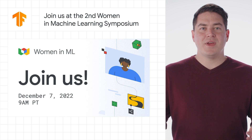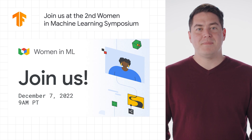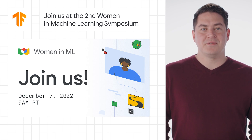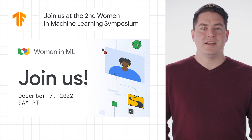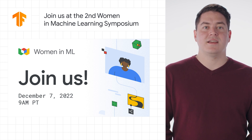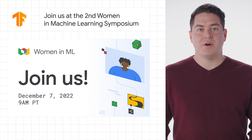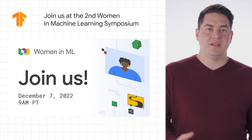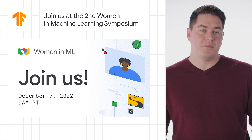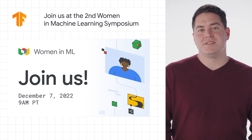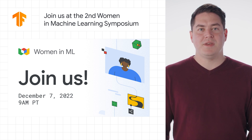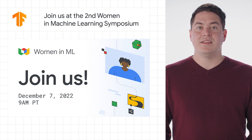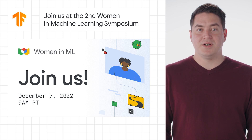Next up, we have the Women in Machine Learning Symposium back for a second year in a row. This year, we'll focus on the latest machine learning tools, techniques, and getting the latest scoop on the latest machine learning products from Google. This event will take place on December 7th from 9 a.m. to 1 p.m. Pacific time, and you can find the link to RSVP in the description box below.